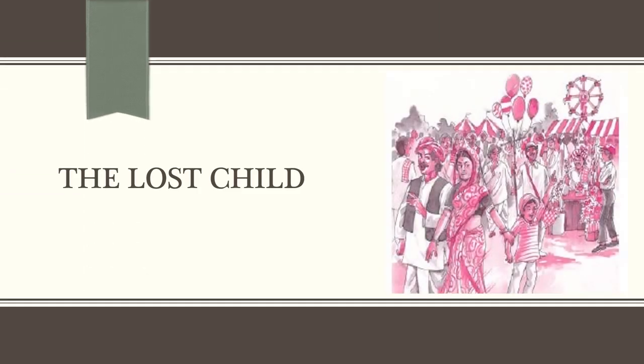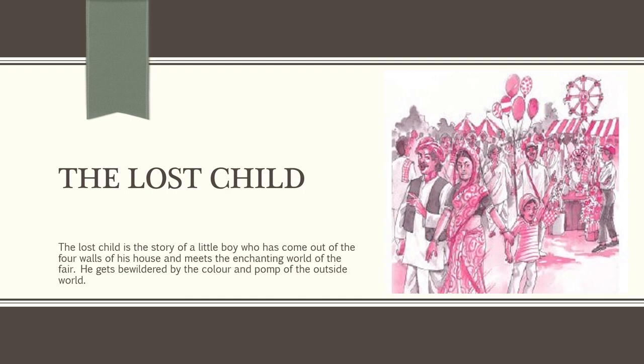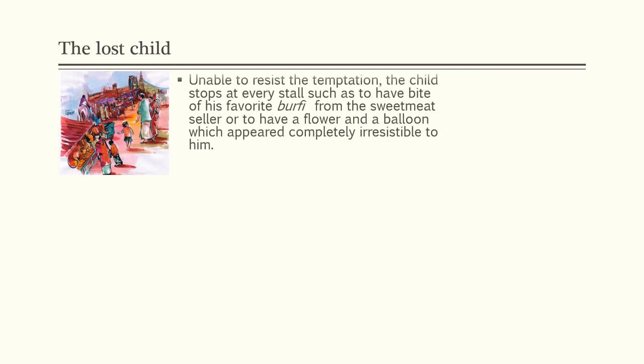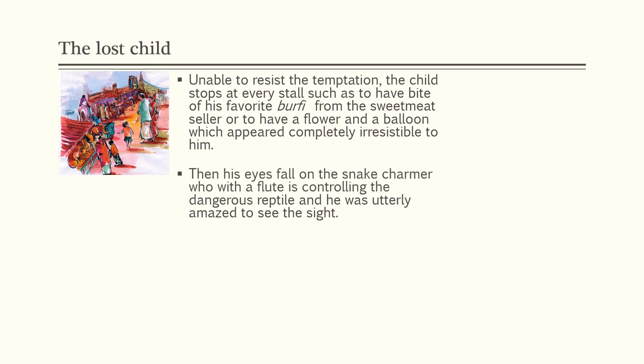'The Lost Child' is the story of a little boy who has come out of the four walls of his house and meets the enchanting world of the fair. He gets bewildered by the colour and pomp of the outside. Unable to resist the temptation, the child stops at every stall — to have a bite of his favourite burfi from the sweetmeat seller, or to have a flower and a balloon which appeared completely irresistible to him. Then his eyes fall on the snake charmer who, with a flute, is controlling the dangerous reptile, and he is utterly amazed.